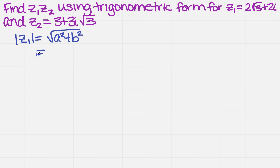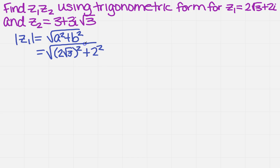In our case, a and b are: a is 2 square root of 3, and b is 2. So we get the square root of 2 square root of 3 squared plus 2 squared. When I do that calculation, I get the square root of 12 plus 4, which is 16, so my answer is just 4.